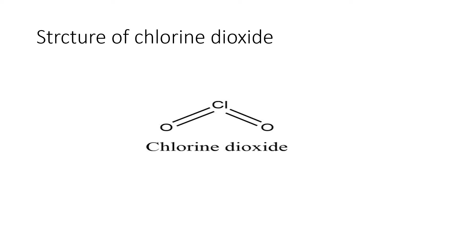Now, structure of Chlorine Dioxide. If you look at the structure, the Chlorine atom is placed at the center and two Oxygen atoms are attached to Chlorine with double bond. There are two sigma and two pi bonds. Total number of bonds are four. It has an odd number of valence electrons. Therefore, it is a paramagnetic radical. It can undergo dimerization. It has a symmetrical bent structure.